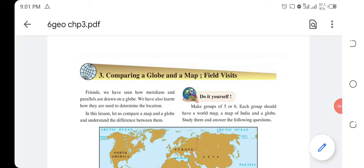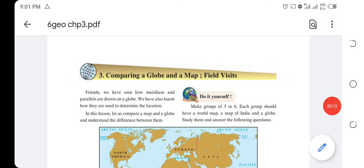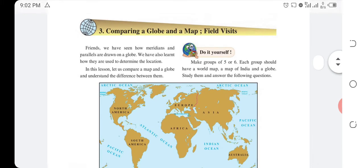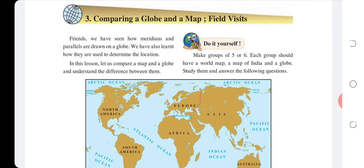Chapter 3: Comparing a Globe and a Map - Field Visits. Friends, we have seen how meridians and parallels are drawn on a globe. We have also learned how they are used to determine location. In this lesson, let us compare a map and a globe and understand the difference between them.